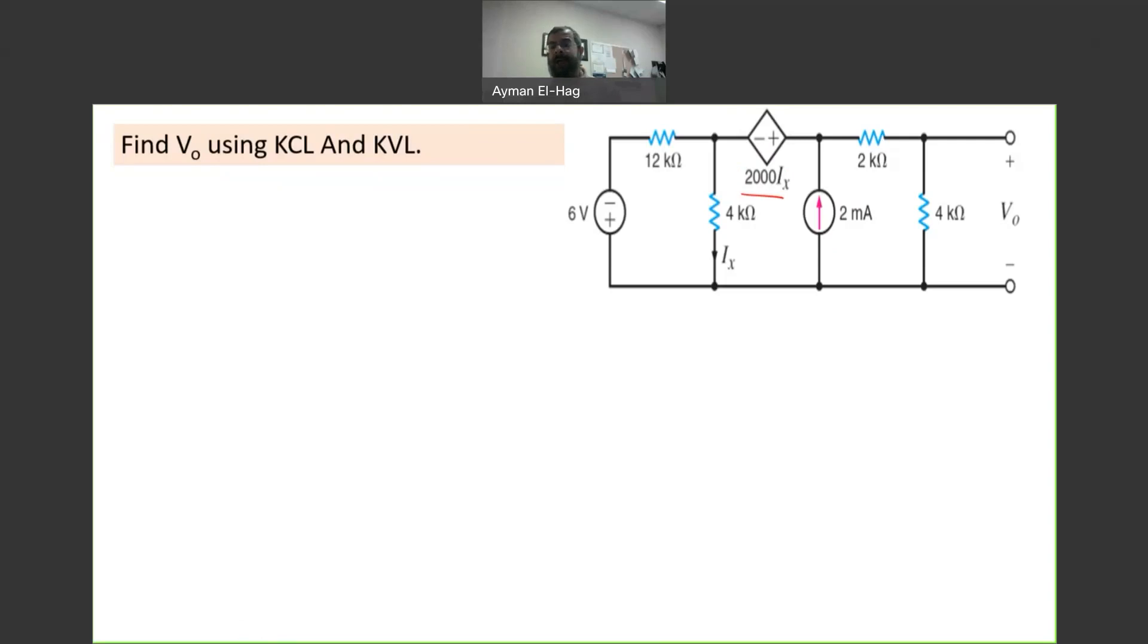We want to apply KCL and KVL to find what? To find Vout, the voltage across this 4 kilo ohm resistance.